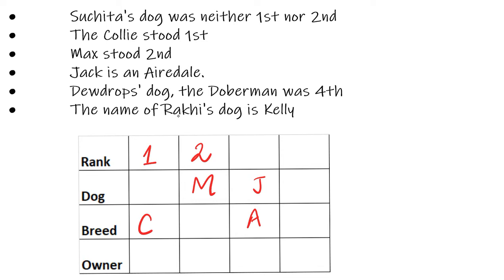The Doberman cannot be first because that is Collie, and cannot be the Airedale slot either. Doberman comes in the fourth position — that is the fourth dog — and we know Doberman is Dewdrop's dog. So the third position becomes Boxer, since positions one, two, and four are already Collie, Airedale, and Doberman.